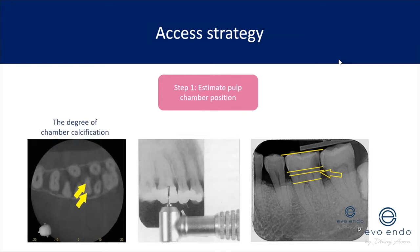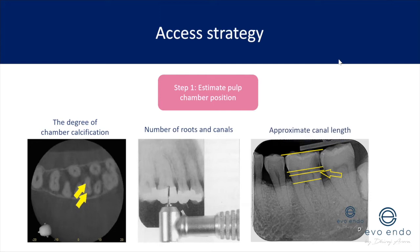What am I looking for on my x-rays? The degree of chamber calcification — the more calcification, the more difficult the endo. The number of roots and suspected canals expected for that tooth, and the approximate canal length. Always look at calcifications, number of canals, approximate length, and the shape of the canals — the more curved a canal, the more challenging its preparation.